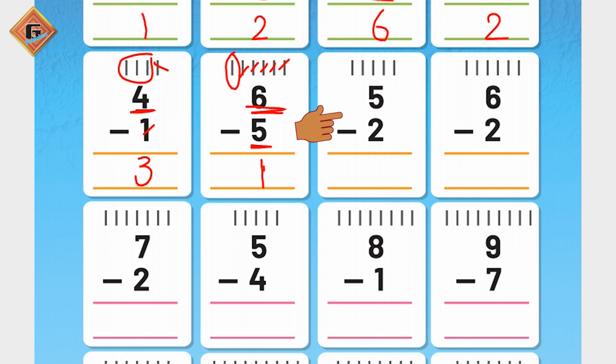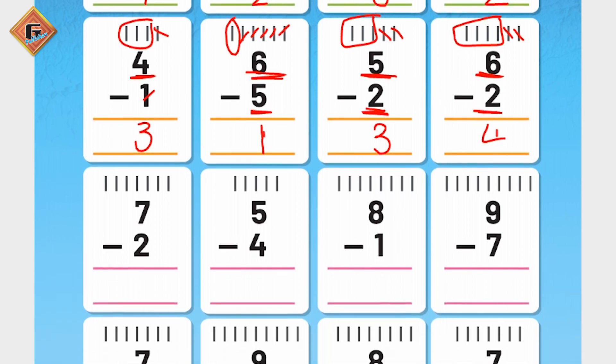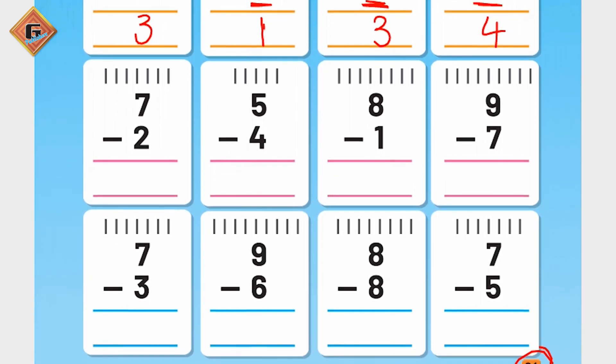Okay, now we were having 5 pencils, 2 pencils we will use: 1 and 2. Remaining pencils we are having are 3 pencils. And now we are having 6 pencils, we used 2 pencils: 1 and 2. Remaining pencils we have are 4. Yes, subtraction is what remains.